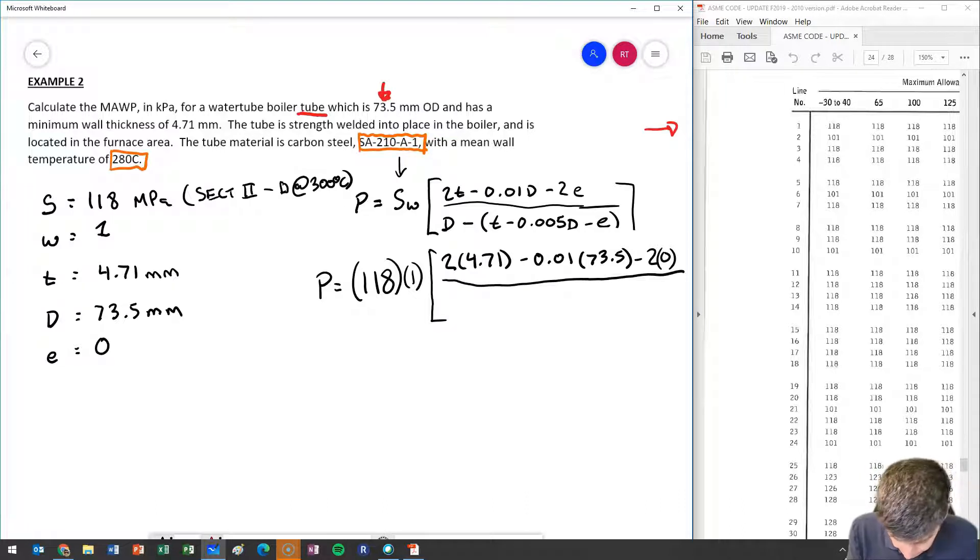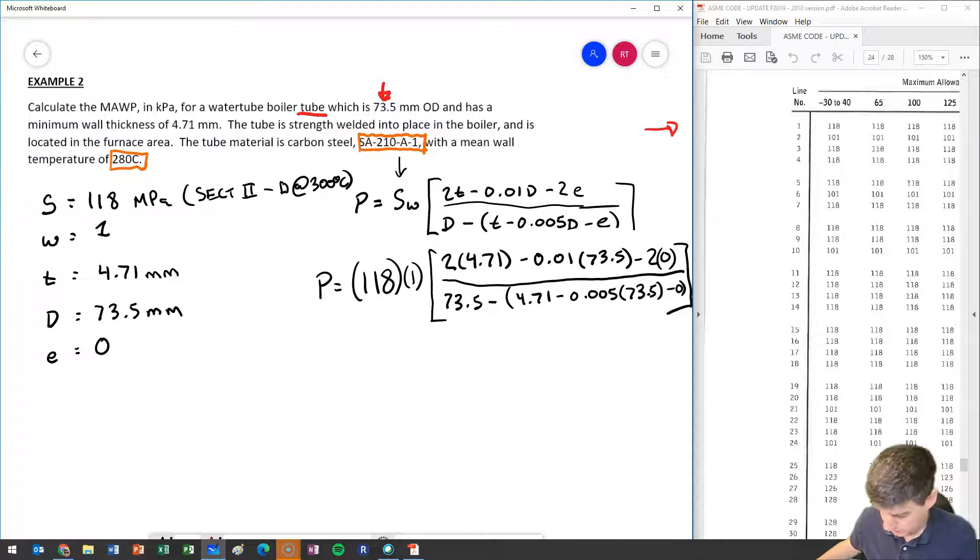2 times 4.71 minus 0.01 times 73.5 minus 2 times 0, all upon 73.5 minus 4.71 minus 0.005 times 73.5 minus 0. Okay, so be really careful of this equation. You have a lot going on, so make sure that you have it. Do it by steps so that we're not trying to do everything all at once. Once again, before I start all this, I want to make sure I write out my strength value here so I don't forget about it. Very common mistake.